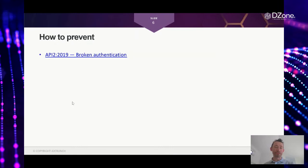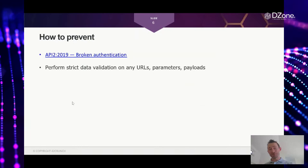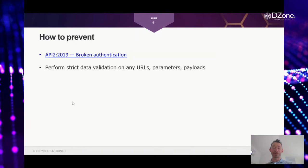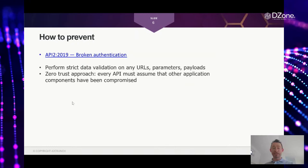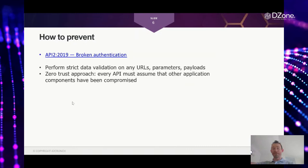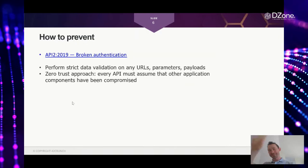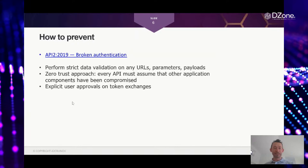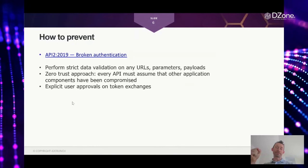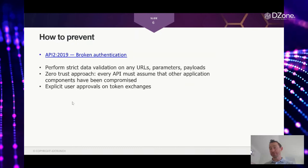This is a broken authentication vulnerability in OWASP API Security Top 10 terminology. To prevent it: strictly validate all data — URLs, parameters, payloads, anything coming from users or other components. Adopt a zero-trust attitude; don't assume that because something is calling your API it's a trusted component of your application. Any API should treat everything else as potentially attacker-controlled. Token exchanges are very dangerous — when one piece of infrastructure is compromised, attackers can pivot to compromise other components. Consider explicit user approvals.